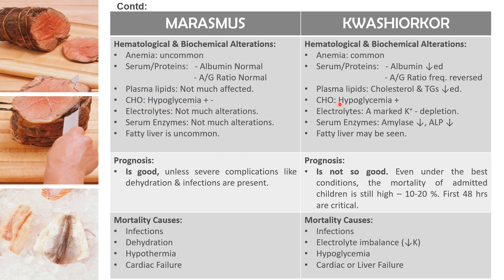Hematological and biochemical alterations: anemia is uncommon in Marasmus while anemia is common in Kwashiorkor because of marked protein depletion. Serum proteins are almost normal or may be decreased in Marasmus, but in Kwashiorkor there is a marked decrease in serum albumin level and the albumin-globulin ratio is reversed. Plasma lipids are not much affected in Marasmus, while decreased cholesterol and triglycerides may be observed in Kwashiorkor. Hypoglycemia may or may not be present in Marasmus, while hypoglycemia is found in Kwashiorkor. Electrolytes show little alteration in Marasmus, but in Kwashiorkor there is marked potassium depletion leading to serious complications of the heart and skeletal muscles. Serum enzymes are almost normal in Marasmus, while serum amylase or alkaline phosphatase activity is decreased in Kwashiorkor. Fatty liver is uncommon in Marasmus but may be seen in Kwashiorkor.